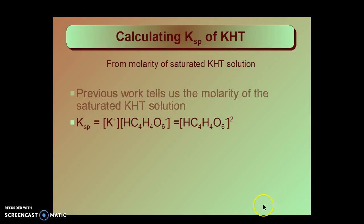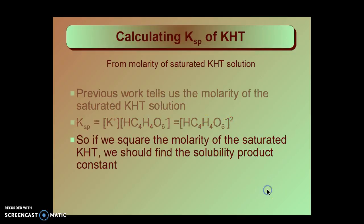That means if we know the molarity of the saturated potassium hydrogen tartrate solution, then we simply multiply that by itself, that is square it, and that gives us the Ksp. We square the molarity of the saturated potassium hydrogen tartrate and that gives us the solubility product constant at that temperature.